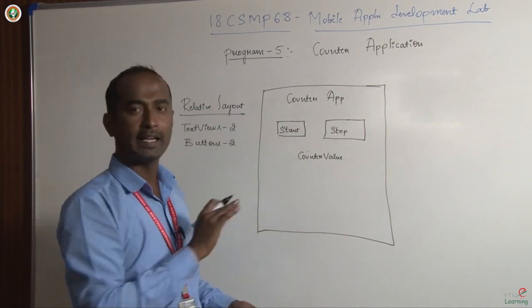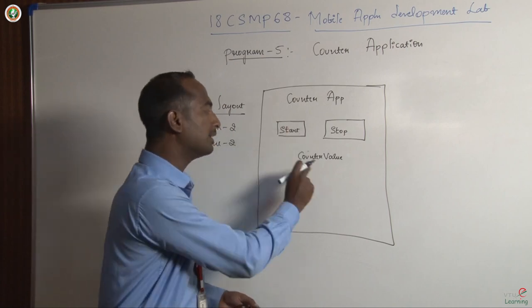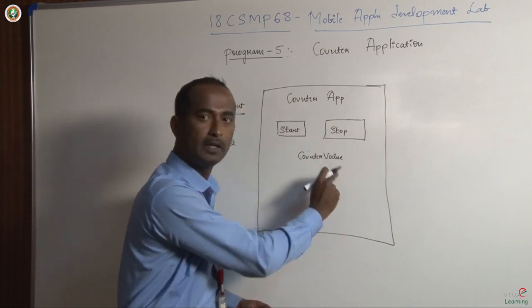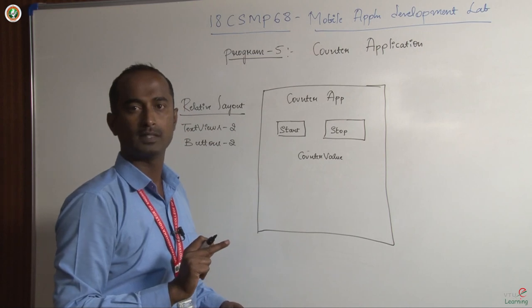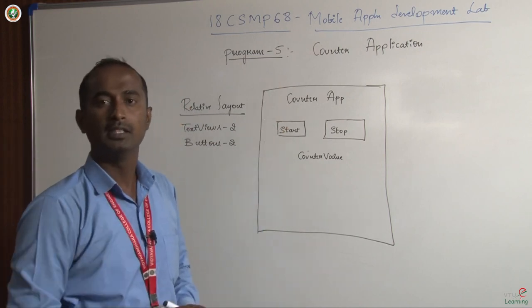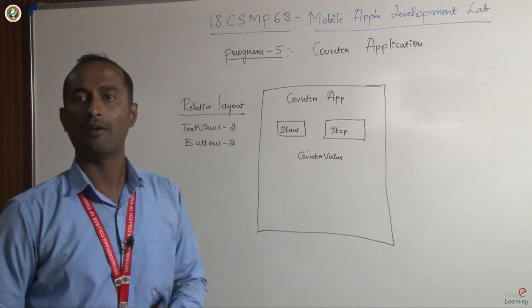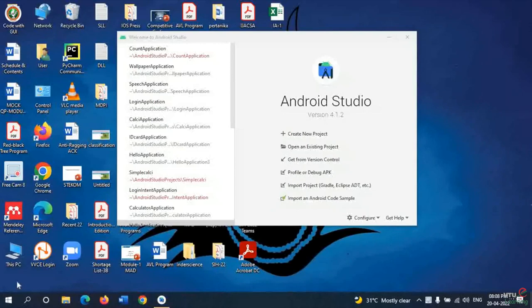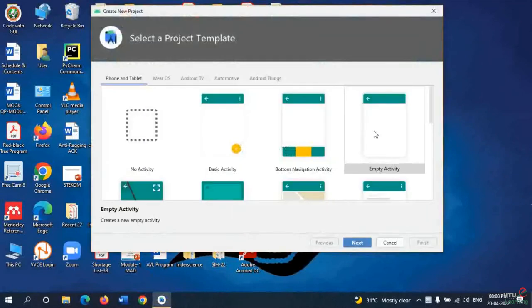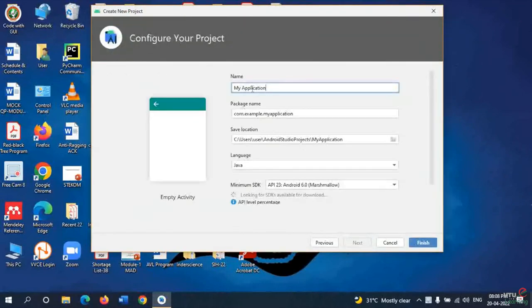The application context is simple: whenever you press start, the counter value should increment; whenever you press stop, it should stop. Let us start the development. I will create a project, select an empty activity, name the application 'count application', set the language to Java, and click finish.